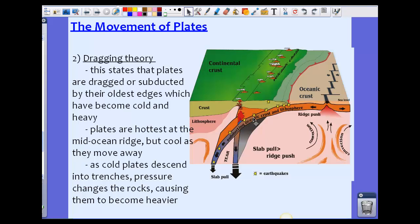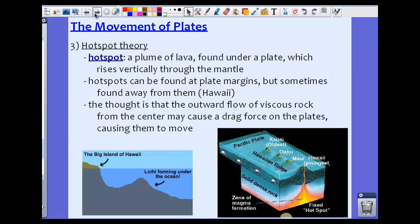Basically, the crust itself is pulling the newer crust down into these trenches. Our third theory is called the hot spot theory. Hot spots are plumes of lava that are usually found under a plate. They rise vertically through the mantle. Hot spots are just how they're named - they are hot spots. There's a random magma pool underneath the crust in the mantle that finds a way up towards the crust and surface.